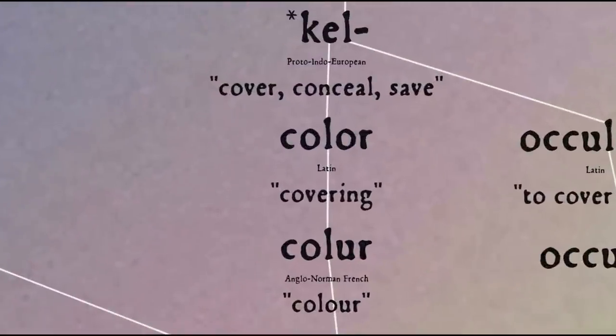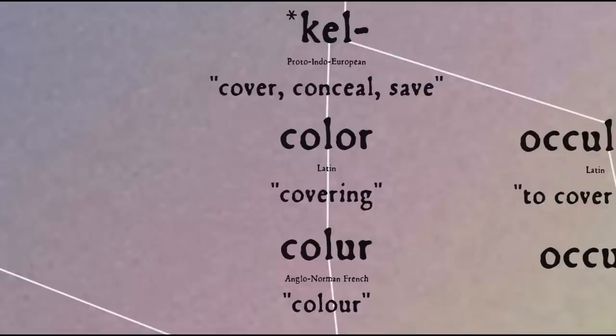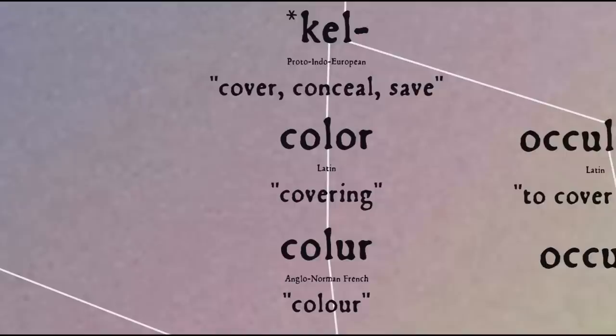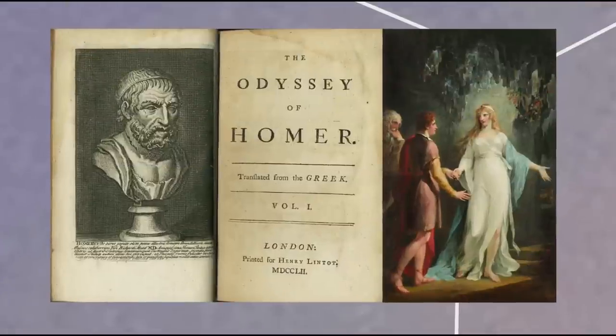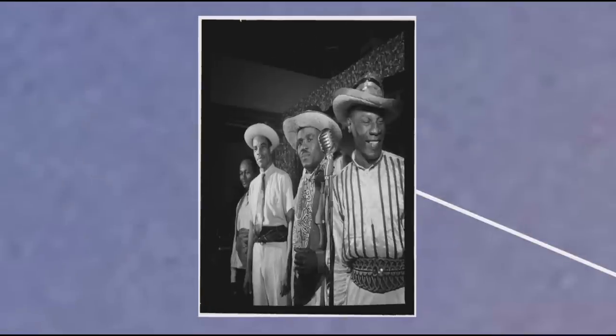The word colour comes into Middle English from Anglo-Norman and Old French, ultimately from Latin. Latin 'color' in turn comes from the Old Latin form 'colos', meaning 'covering', from the Proto-Indo-European root 'kel', meaning to cover, conceal, save — also the source of such words as conceal, whole, hollow, and clandestine, as well as Calypso, the name of the sea nymph in Homer's Odyssey, who attempts to keep the hero Odysseus on her island Ogygia rather than let him return home, effectively concealing him from the world.